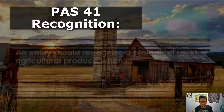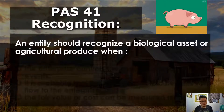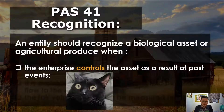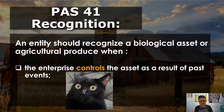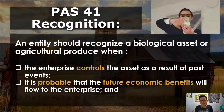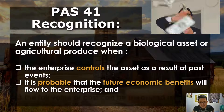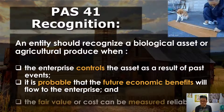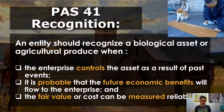Let's start with recognition. An entity should recognize a biological asset or agricultural produce when the following are met. First, you control the asset as a result of a past event — meaning you can decide what you want to do with it: sell it, keep it, or grow it. Second, it is probable that future economic benefits will flow to the enterprise — meaning if I sell this right now, I would receive a substantially favorable trade in terms of resources.